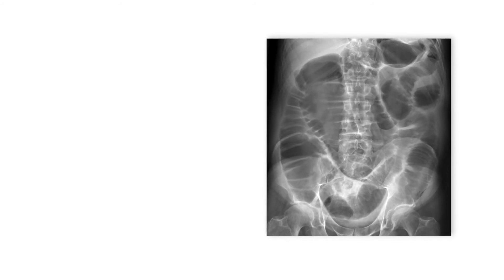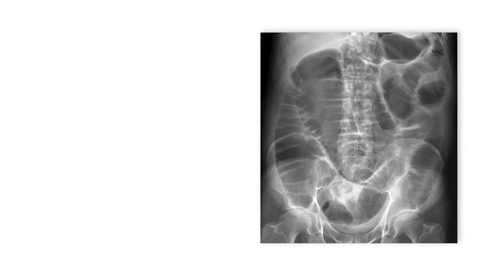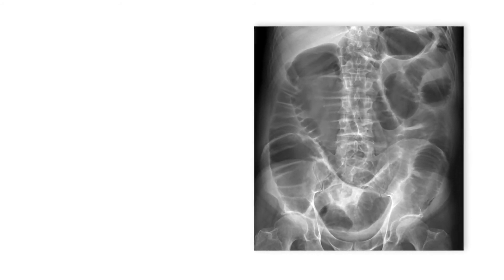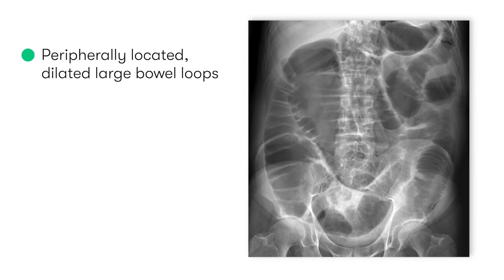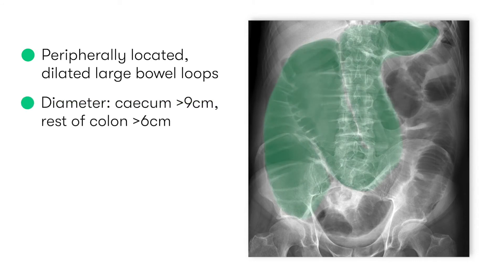Looking more closely, in abdominal X-rays of large bowel obstruction the features we'd normally expect to see are peripherally located dilated large bowel loops, with a diameter of more than nine centimetres for the caecum and more than six centimetres for the other parts of the large bowel.